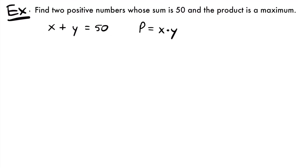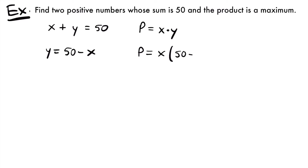These two numbers must sum to 50 — that won't change, unlike the product which we're trying to maximize. So we'll use the constraint to eliminate a variable. Solving for y: y equals 50 minus x. Substituting into the product equation gives P equals x times (50 minus x). Distributing, we get P equals 50x minus x squared.